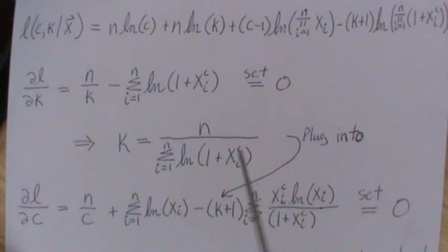So it's the sum, 1 over 1 plus Xi to the C. And then the derivative of this inner part, Xi to the C, remember we're taking it in terms of C. The derivative is Xi to the C times log of Xi. We set it equal to 0.